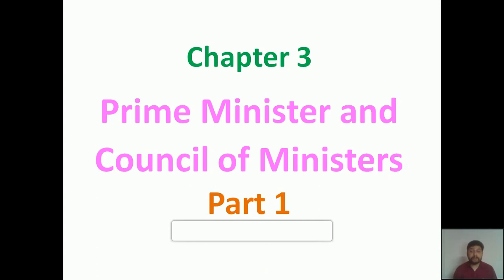From the title itself it will be clear to you what we are going to discuss in this chapter. According to our democratic system of government, we have a prime minister, and to support the prime minister we have a council of ministers. Throughout this chapter we are going to discuss their powers, their functions, how they are appointed, the term of their administration, and different powers like executive powers, legislative powers, and administrative powers.